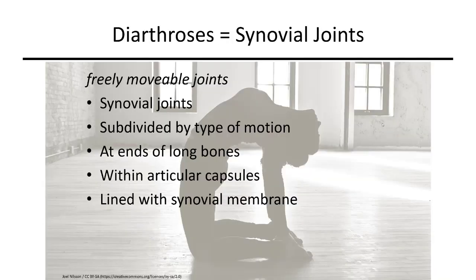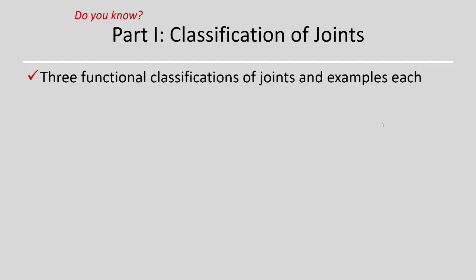The third classification is diarthrosis, familiarly known as synovial joints. These are freely movable and will be discussed in more detail in the next section. In this first section you are responsible for knowing the three functional classifications of joints and an example of each one. Don't worry about the subclasses — just know examples of the three main classifications.